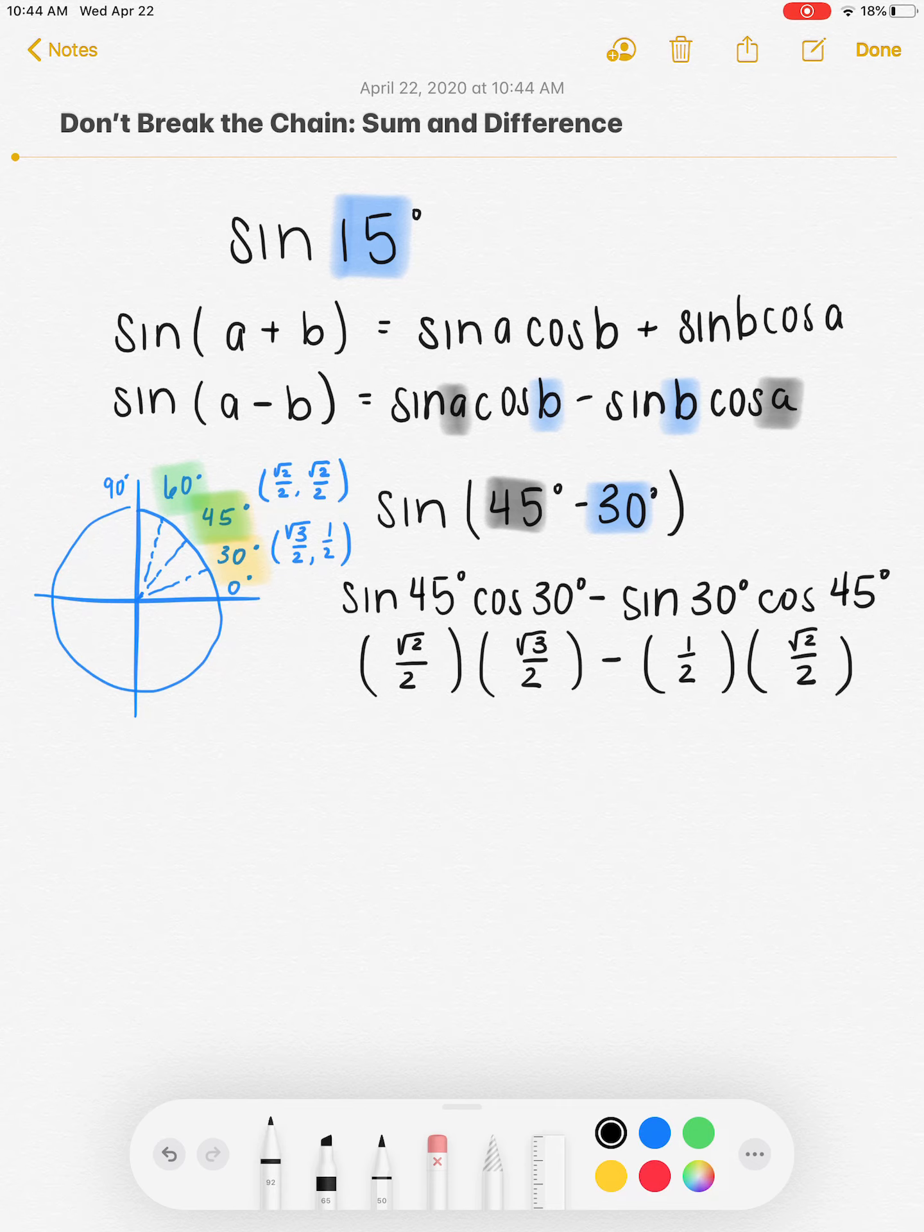From here, I'm just going to simplify these. So when I multiply the first one, I do root 2 times root 3, which gives me root 6. And then I do the denominators, 2 times 2 is 4, minus here, I get 1 times root 2 is root 2 over 4.